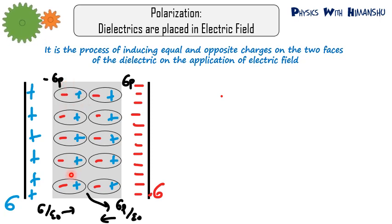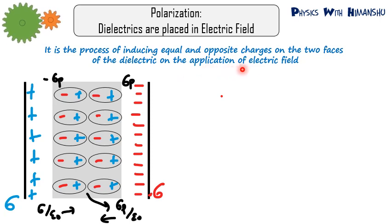So negative charge gets deposited on the face of the dielectric near the positive plate, and positive charge gets deposited on the face near the negative plate. This creates two electric fields: one due to the plates (sigma/ε₀, directed left to right) and another due to the induced surface charges on the dielectric (sigma_p/ε₀). This process of inducing equal and opposite charges on the two faces of a dielectric on application of an electric field is called polarization.